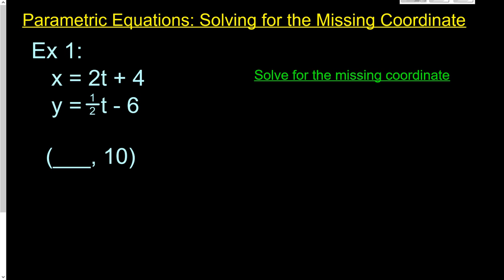So our first example here, you're given a parametric equation: x equals 2t plus 4, and y equals one-half t minus 6. It also tells us there's a coordinate blank comma 10, and we need to figure out what that blank is.